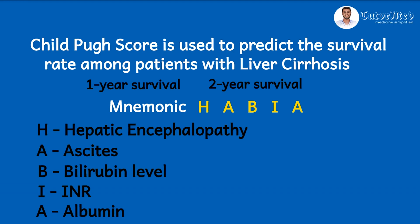The last A stands for Albumin level. All five components have points depending on what the patient has, and when the points are added we can classify patients with cirrhosis as having mild cirrhosis (Grade A), moderate cirrhosis (Grade B), or severe cirrhosis (Grade C).